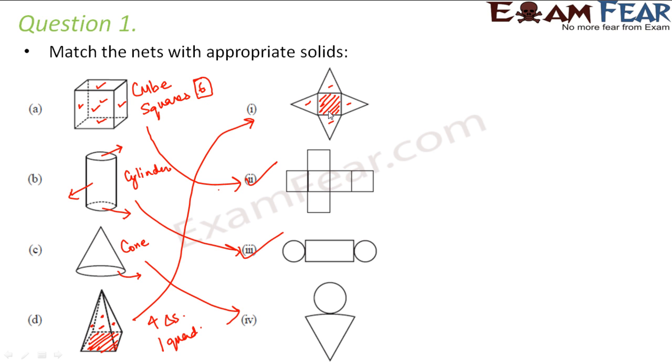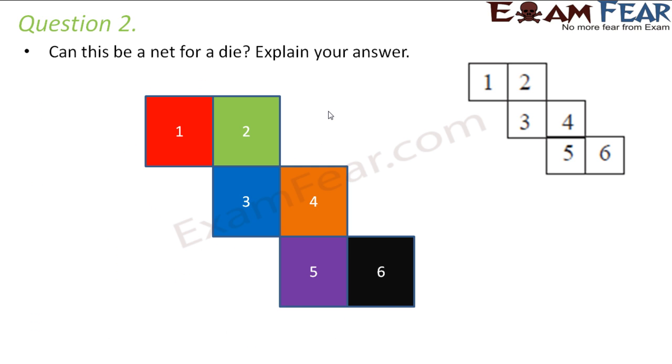Question number two: can this be a net for a die? Explain your answer. I'm sure all of you would have played Ludo and you would have seen the die that we use in Ludo. The die is in the shape of a cube which has six square surfaces, and on each surface you have a number like one, two, three, four, five, and six.